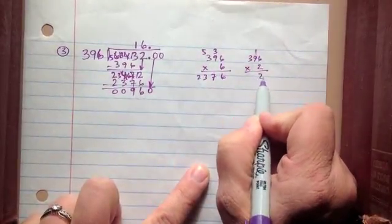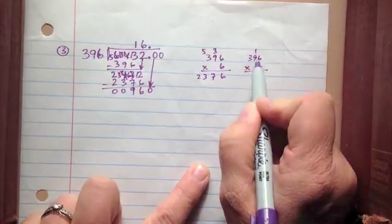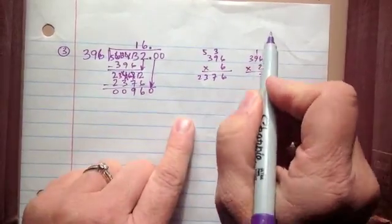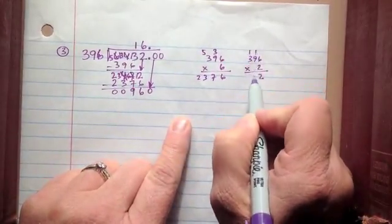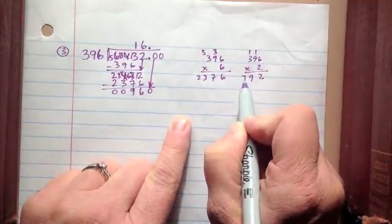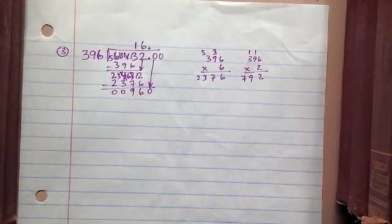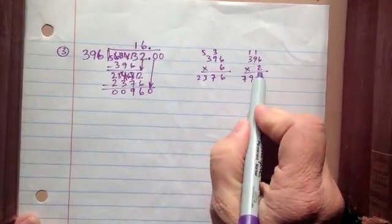So let's just get the exact amount that I'm going to have to put down here. 6 times 2 is 12. 2 times 9 is 18, plus 1 is 19. 2 times 3 is 6, plus 1 is 7. 792 is what I get when I multiply 396 by 2.